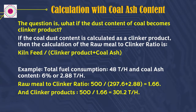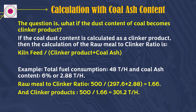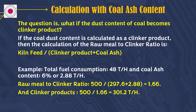The question is: what if the dust content of coal becomes a clinker product? If coal dust content is calculated as a clinker product, then the raw meal to clinker ratio = kiln feed ÷ (clinker product + coal ash). Example: total fuel consumption is 48 tons per hour, and coal dust content is 6%, or 2.88 tons per hour. Then raw meal to clinker ratio = 500 ÷ (297.6 + 2.88) = 1.66. And clinker production = 500 ÷ 1.66 = 301.2 tons per hour.